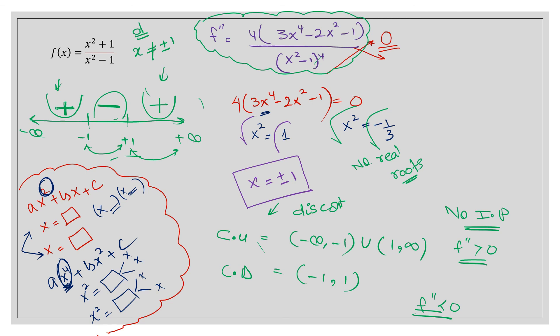I hope you understand how to find the first and second derivatives, discuss the discontinuities, and find the inflection points using the second derivative test for rational functions. Practice by writing down as many questions as possible from your textbook or the internet involving rational functions, and try to find the inflection points and discontinuities. If you want to understand a different kind of question, write in the comment box, and if you understood the concept, give a thumbs up.